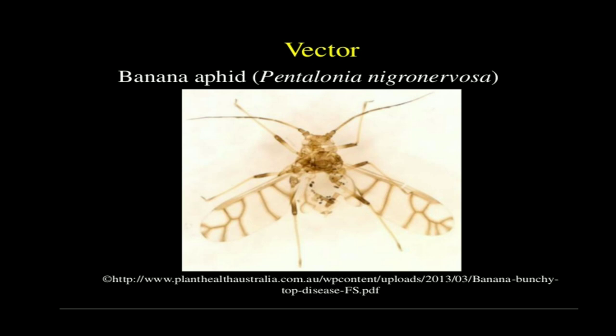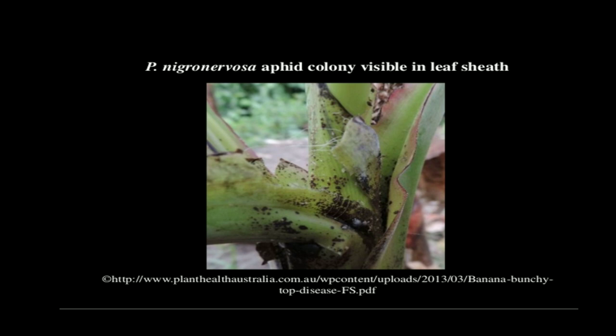Here you can see the vector of this banana virus — the banana aphid Pentalonia nigronervosa. You can see its structure in the photograph. The aphids in colony are clearly visible. These are the leaf sheaths, and inside the leaf sheaths you can see whitish-black structures — these are the colonies of this aphid living inside the leaf sheath.